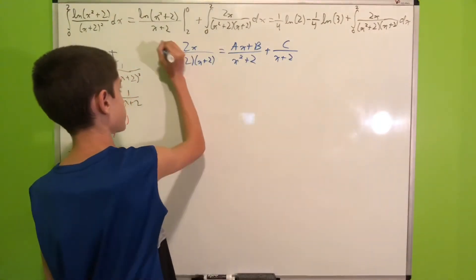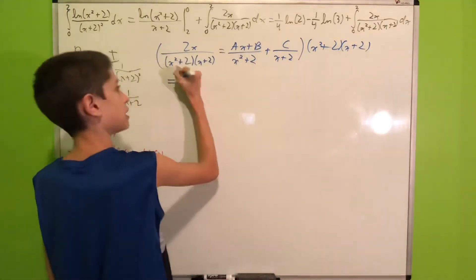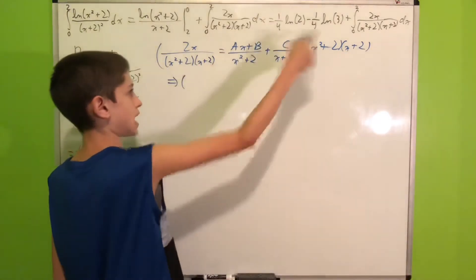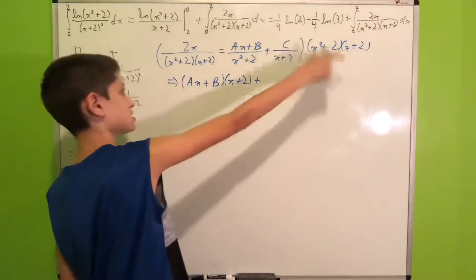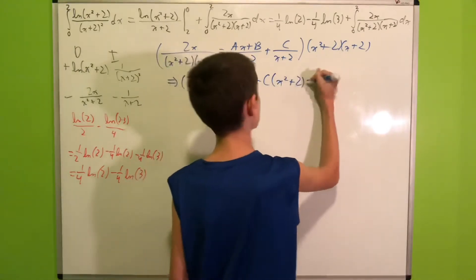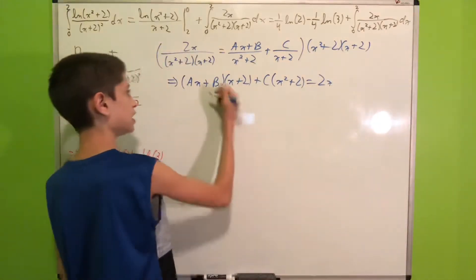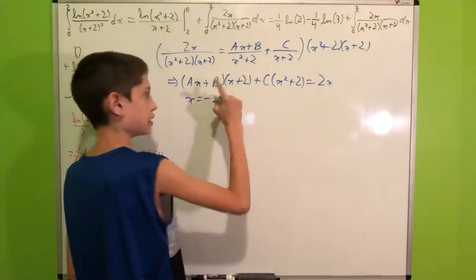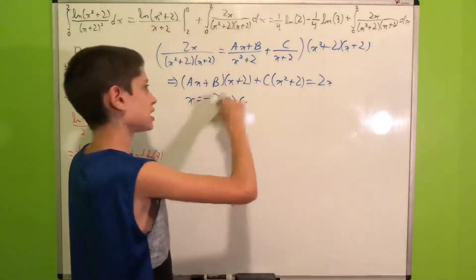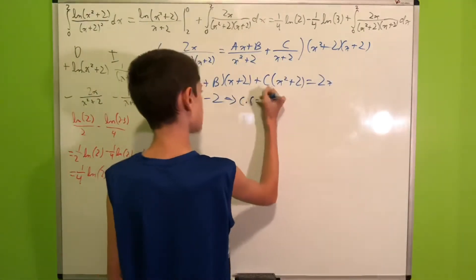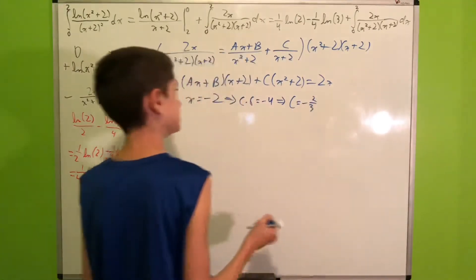We multiply both sides by (x² + 2)(x + 2). On the left side the (x + 2) cancels, giving (Ax + B)(x + 2). On the right side the (x² + 2) cancels, giving C(x² + 2), all equal to 2x. Plugging in x = −2: (−2 + 2) = 0 so the (Ax + B) term vanishes, and we get C·((−2)² + 2) = C·6 = 2·(−2) = −4, which means C = −2/3.